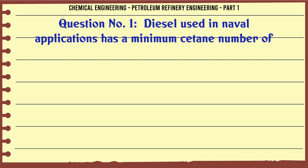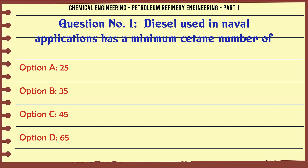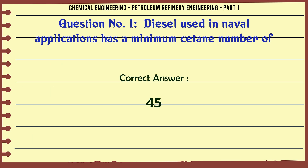Diesel used in naval applications has a minimum cetane number of: A. 25, B. 35, C. 45, D. 65. The correct answer is 45.